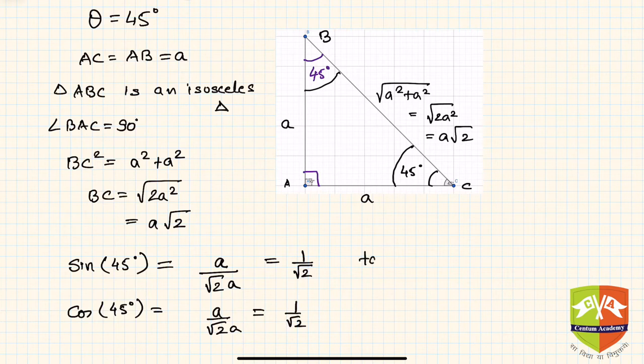Now tan of 45 degrees is sine 45 upon cosine 45. It is (1/√2) divided by (1/√2) which equals 1. Or you can say that tan is perpendicular by base, so a by a equals 1.